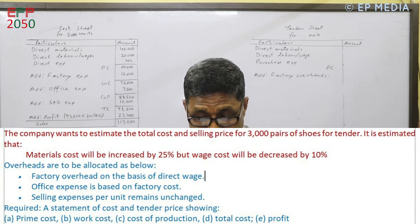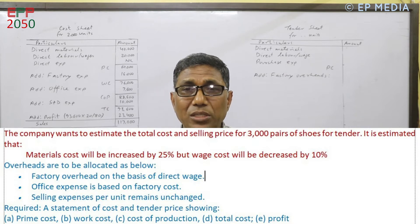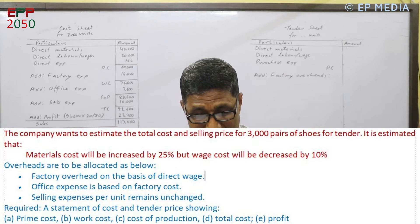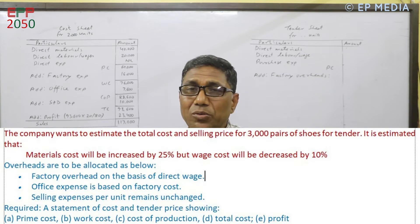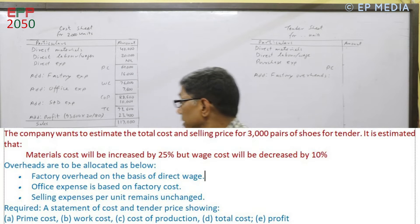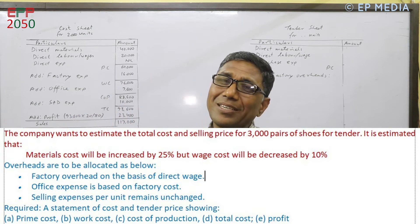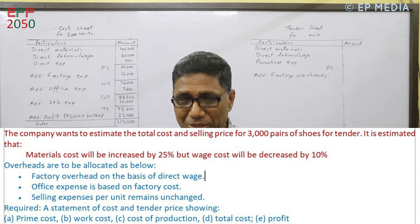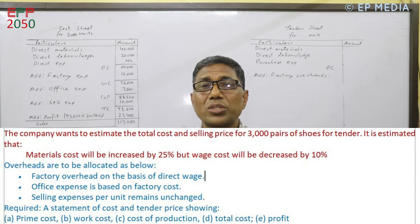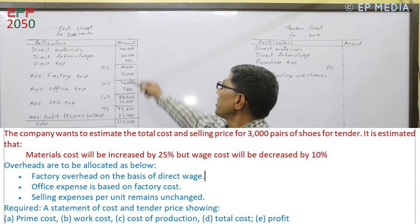Overheads are to be worked out as follows. Factory overhead is on the basis of direct wages. In the tender question, factory expenses are a percentage of direct wages — not prime cost. Office expenses are based on factory cost, meaning work cost. Selling expenses per unit remain unchanged. Selling price per unit is 5,000 in the unit, so there is no change in selling and distribution at 5,000 per unit.